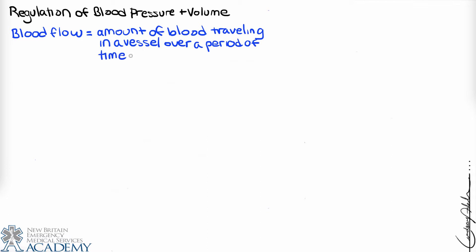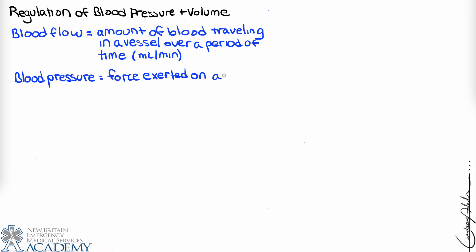Blood flow can vary to certain areas of the body based on need. Blood pressure is the force per unit area exerted on a vessel wall, measured in millimeters of mercury. Generally, we measure systemic arterial pressure in the largest arteries near the heart. Most importantly, like other pressure gradients, blood flows forward in a vascular circuit down a pressure gradient.